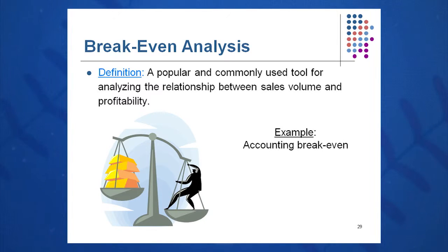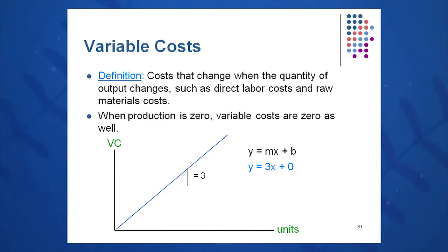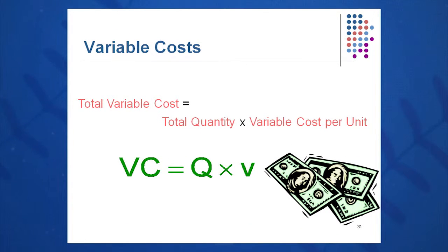Let's look at some terminology we might use in this analysis. First, variable cost. You see the variable cost curve here — it basically takes the form Y equals MX plus B, from math class. Costs change when the quantity changes. So if I make one more unit, the variable cost goes up $3, and the formula for this curve becomes Y equals 3X plus zero. It has a Y-intercept of zero. Variable cost in total equals total quantity times variable cost per unit.